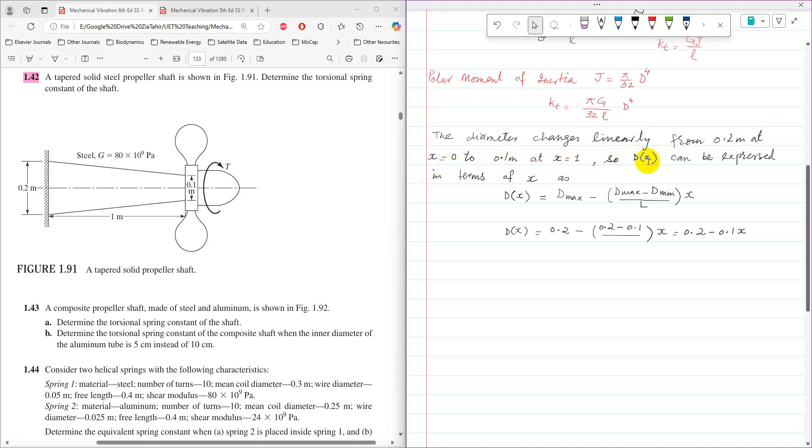So diameter as a function of X can be expressed in terms of X as D maximum minus, inside the bracket, D maximum minus D minimum over L into X.